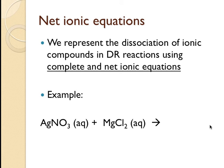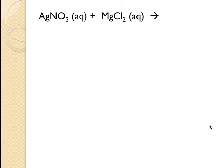When we represent ionic compounds in double replacement reactions, we can write them using complete and net ionic equations. We're going to use as an example the reaction between silver nitrate and magnesium chloride. As we've seen before, to predict what the products would be, we take the anions and cations and basically switch places.